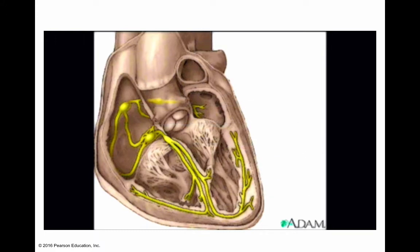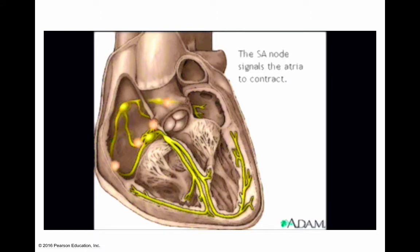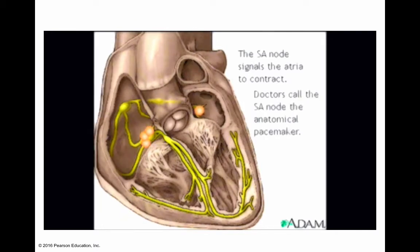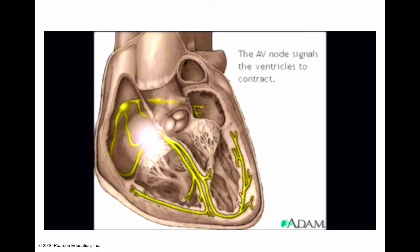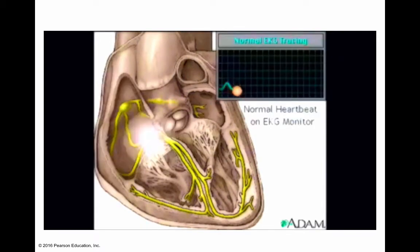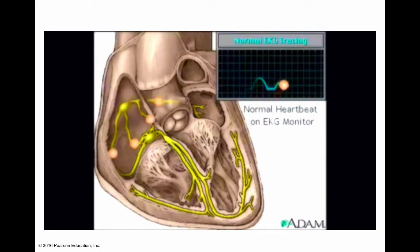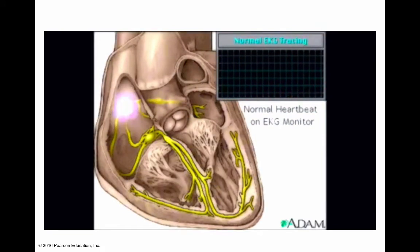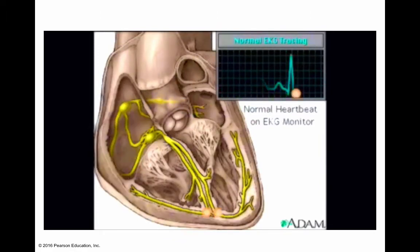The SA node starts the sequence by causing the atrial muscles to contract — that's why doctors sometimes call it the anatomical pacemaker. From there, the signal travels to the AV node, through the bundle of His, down the bundle branches, and through the Purkinje fibers, causing the ventricles to contract. This signal creates an electrical current that can be seen on a graph called an electrocardiogram, or EKG. Doctors use an EKG to see how well the cardiac conduction system works.